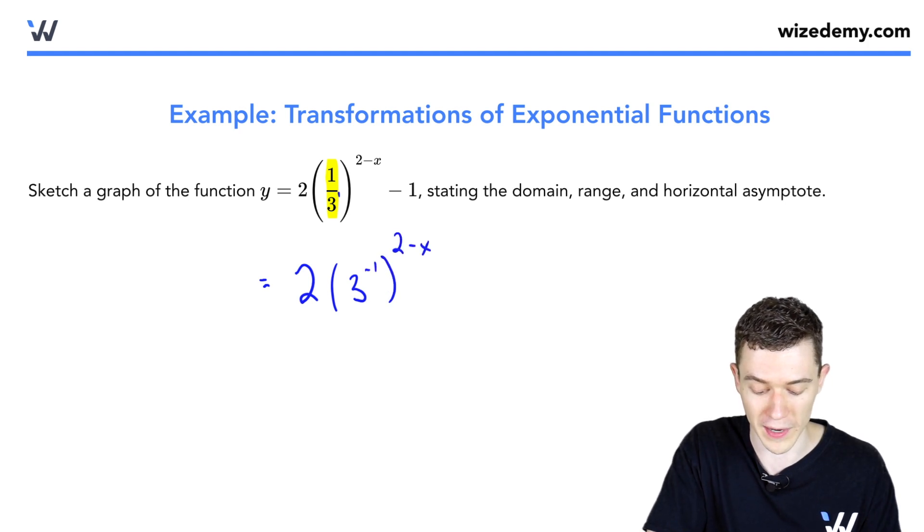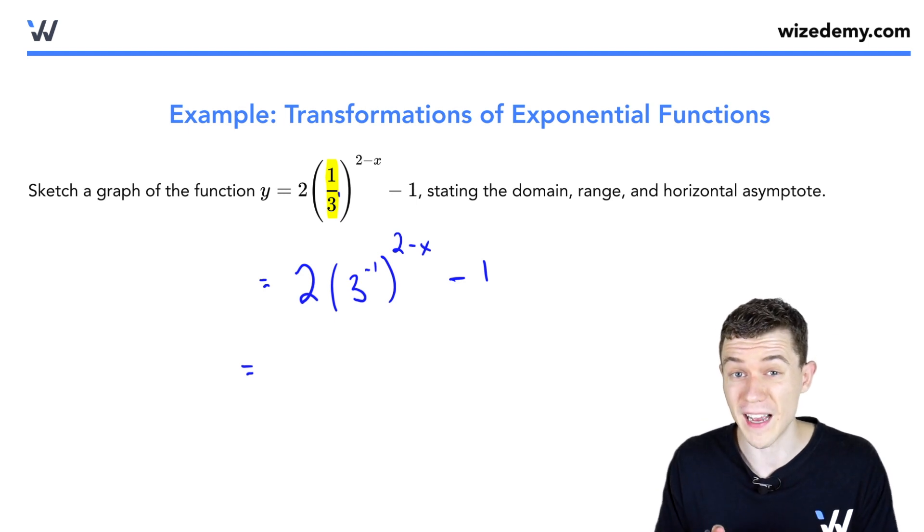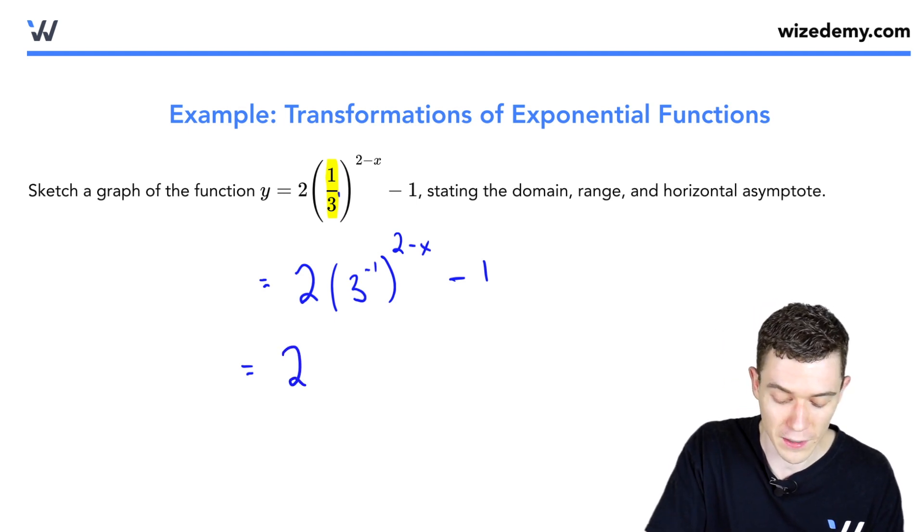And we can even do a little more fancy algebraic footwork to continue to make this easier for us. An exponent raised to an exponent, we know we should multiply those, so this will be two times three.